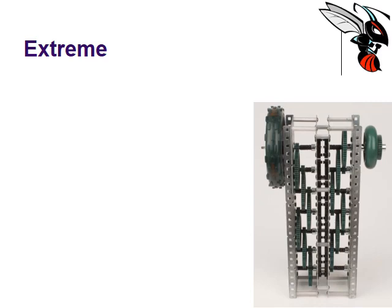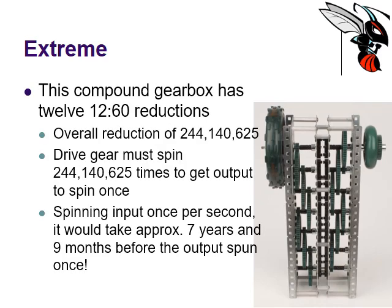You can easily take this to an extreme. Check out this extreme compound gear system — it has twelve 12-to-60 reductions. That means it's an overall reduction of 244,140,625. The drive gear must spin 244 million times to get the output gear to spin once. At that rate, spinning the input once per second would take about seven years and nine months for the output to spin once. This is taken to an extreme, but that's a lot of mechanical advantage.